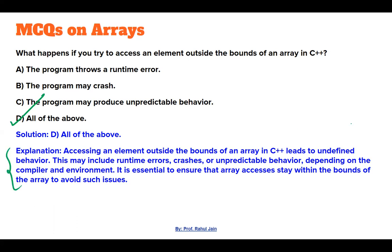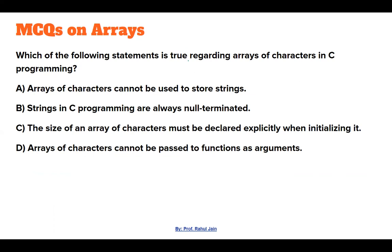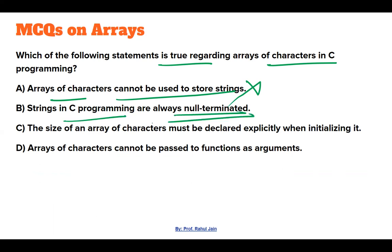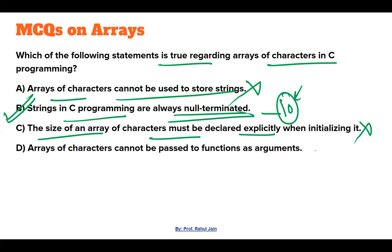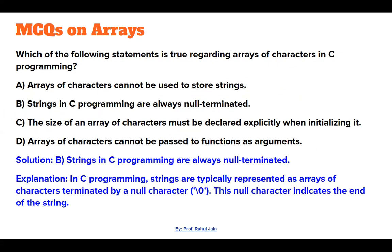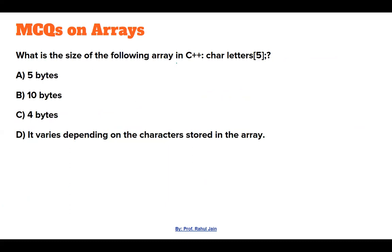The next question asks which statement is true regarding arrays of characters in C. Option A — arrays of characters cannot store strings — incorrect. Option B — strings in C programming are always null-terminated — yes, correct, because when we encounter null it signifies the string is terminated. Option C — size must be declared explicitly — no, implicit declaration is allowed. Option D — cannot be passed to a function — false. So option B is correct.